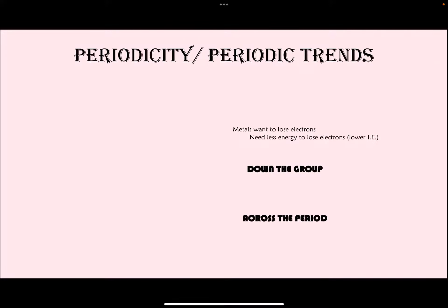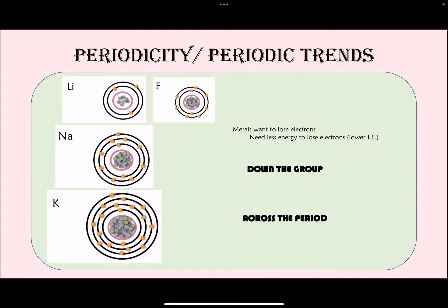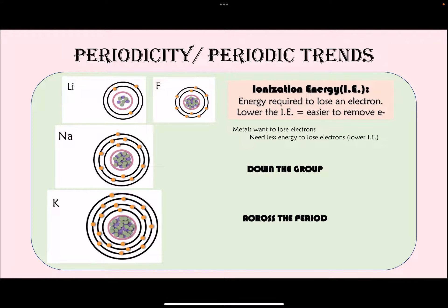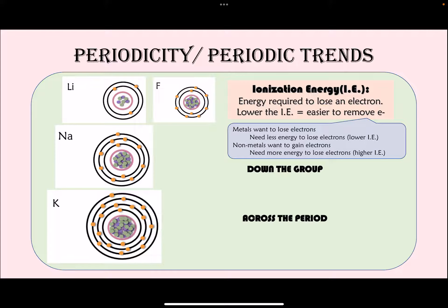Coming back to periodic trends: ionization energy is the amount of energy required to remove an electron. The lower the ionization energy, the easier it is for the atom to lose electrons. Metals, which want to lose electrons, generally have lower ionization energies. Non-metals, which tend to gain electrons, generally have higher ionization energies.